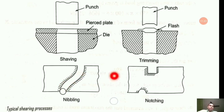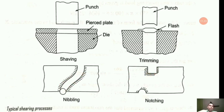Notching is a method to cut a specified small portion of metal towards the edge of the stock.